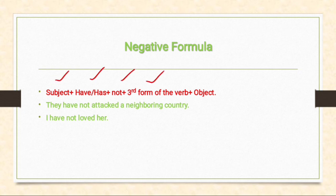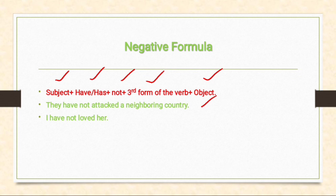Negative formula: subject + have/has + not + third form of the verb + object. For example: 'They have not attacked a neighboring country.' Here 'they' is the subject, 'have' is the helping verb, 'not' marks it as negative, 'attacked' is the third form of the verb, and 'neighboring country' is the object. Another example: 'I have not loved her.'